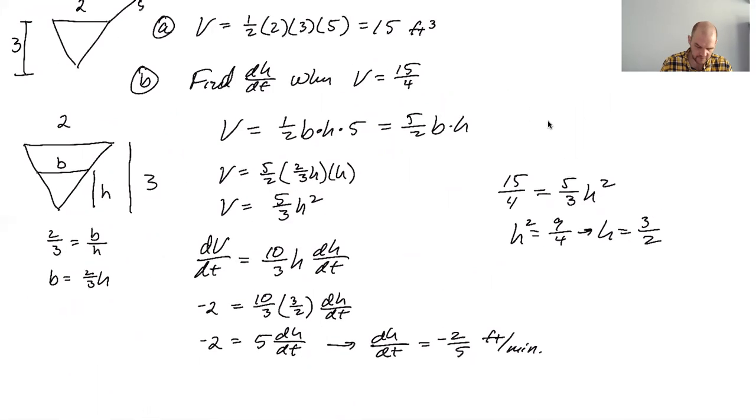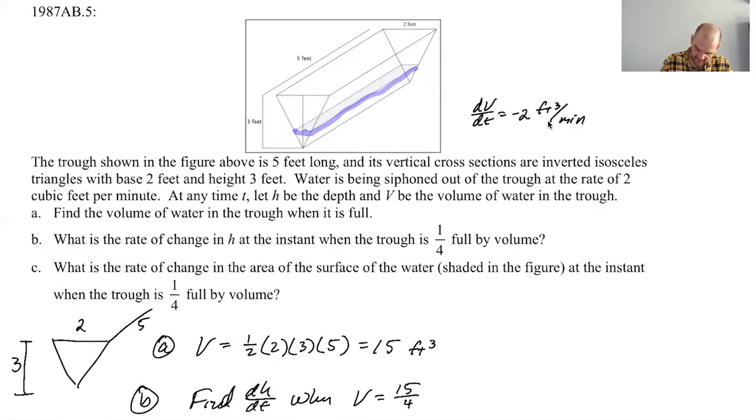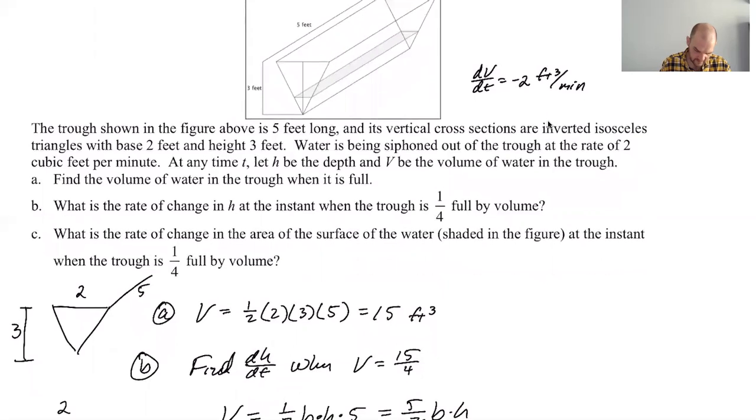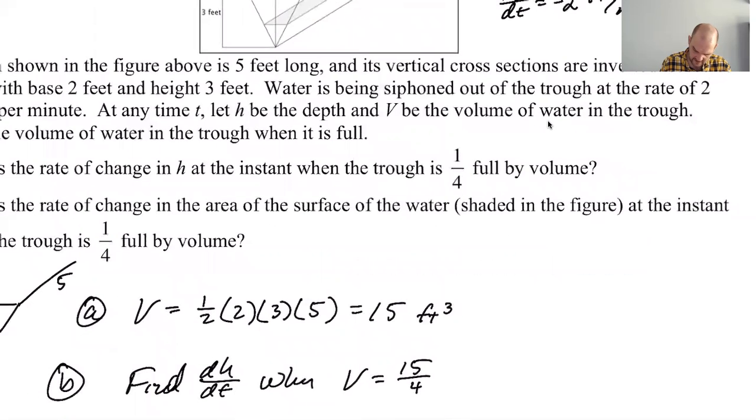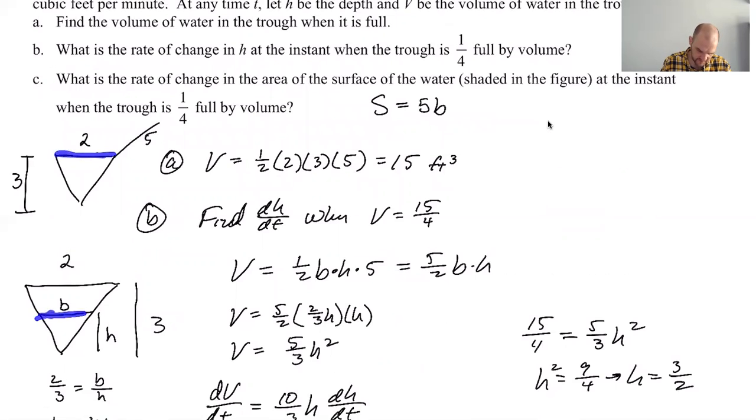I like to put the units. Sometimes the scoring guides don't include units, but like if you can do it you should put units is my opinion. All right, what is the rate of change of the area of the surface of the water shaded in the figure? Okay, here, so this is five and then this is like base right, b in our thing. So the area of that surface is b times the five that's always there. So we're trying to find dS/dt at the moment that it's a quarter full.